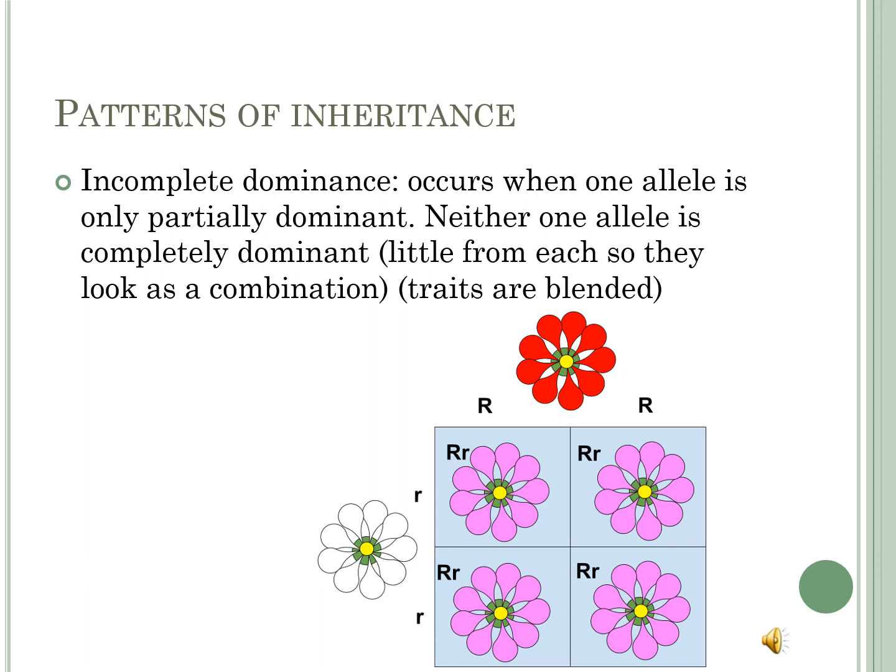In this slide, you also see the same concept — crossing two flowers that are red and white. However, the letter names for the colors are different from those in the book. The outcome is neither red nor white; it is a combination between the two. It becomes pink, or simply a blended combination between white and red.